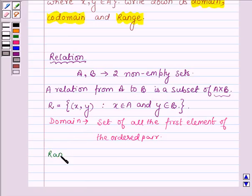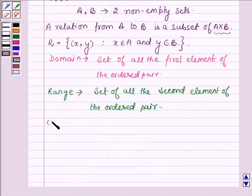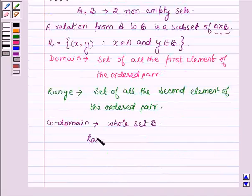And range is the set of all the second element of the ordered pair. And co-domain is the whole set B. And range is always a proper subset of the co-domain.